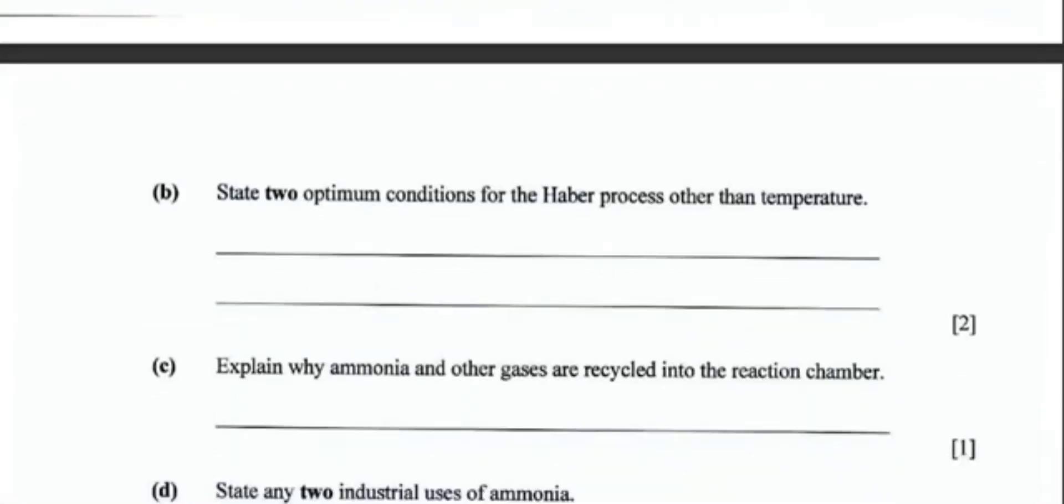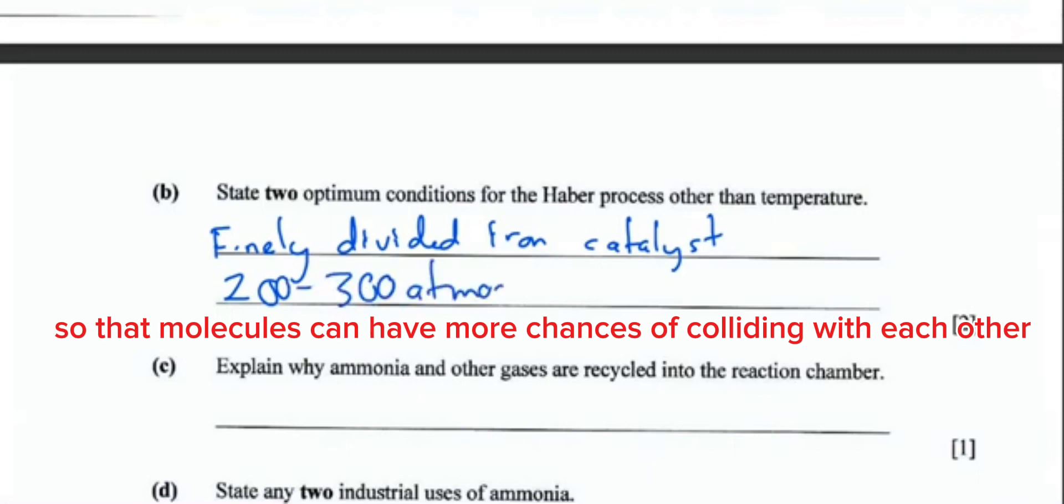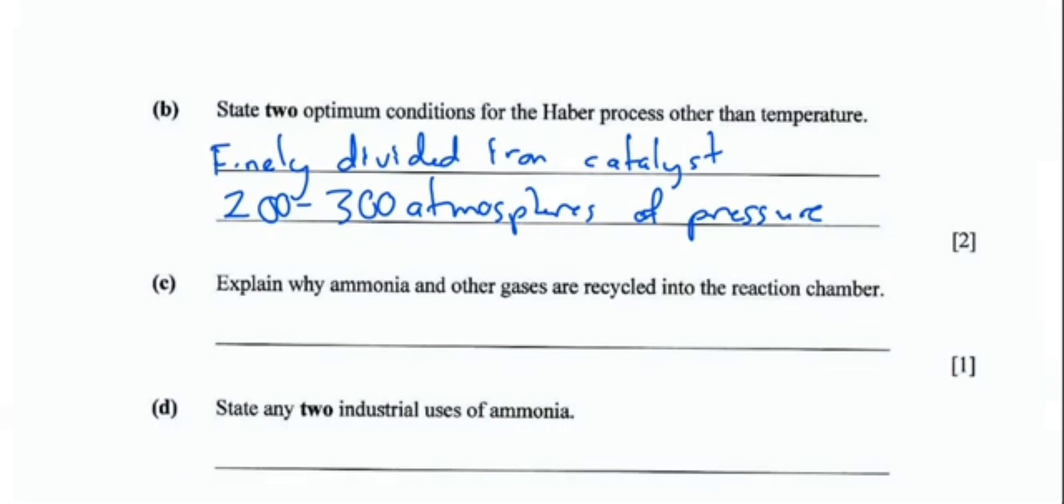It asks you state two optimum conditions for the Haber process other than temperature. If we have our optimum temperature there, we also need a finely divided iron catalyst. The catalyst is going to speed up the rate of reaction. And we also need a pressure of 200 to 300 atmosphere. This is our optimum pressure for this reaction.